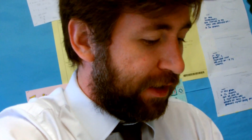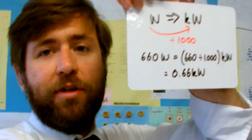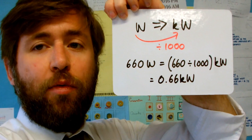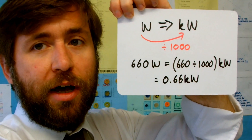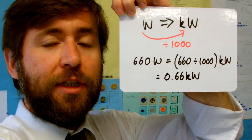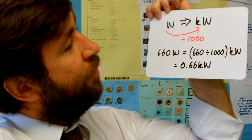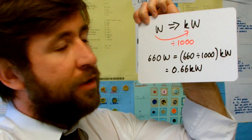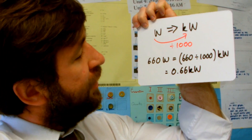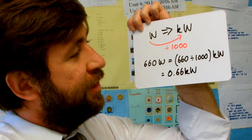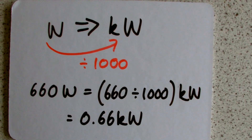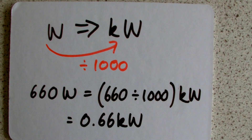And the more you practice that, the easier it will be. Now you don't always just have to go in that direction where there is a prefix — sometimes you're asked to give your answer with a certain prefix. So if you need to use kilowatts to work out energy in kilowatt hours, then you're going to need to convert from watts into kilowatts. This time, we do the inverse of what the unit is. So if it's a thousandth of, then we need to divide by a thousand. For example, 660 watts is 660 divided by a thousand kilowatts, or 0.66 kilowatts.